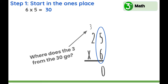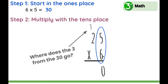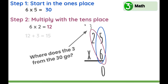Next, what do we multiply? Multiply with the tens place: 6 times 2. What is 6 times 2? 12, yes. What about this 3? What are we going to do? We're going to add it. 12 plus 3 equals 15. 25 times 6 equals 150.